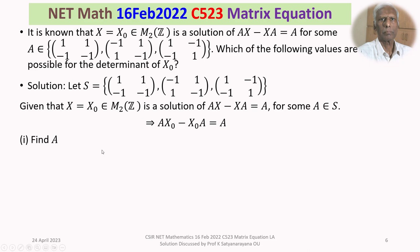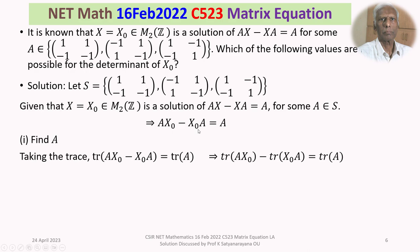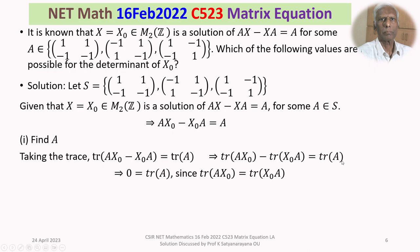Our task is to find A. We take the trace on both sides of this equation. The trace of AX₀ - X₀A equals trace(A). By the property that trace(AB) = trace(BA), we have trace(AX₀) = trace(X₀A), so the left-hand side becomes 0. Therefore, trace(A) = 0.